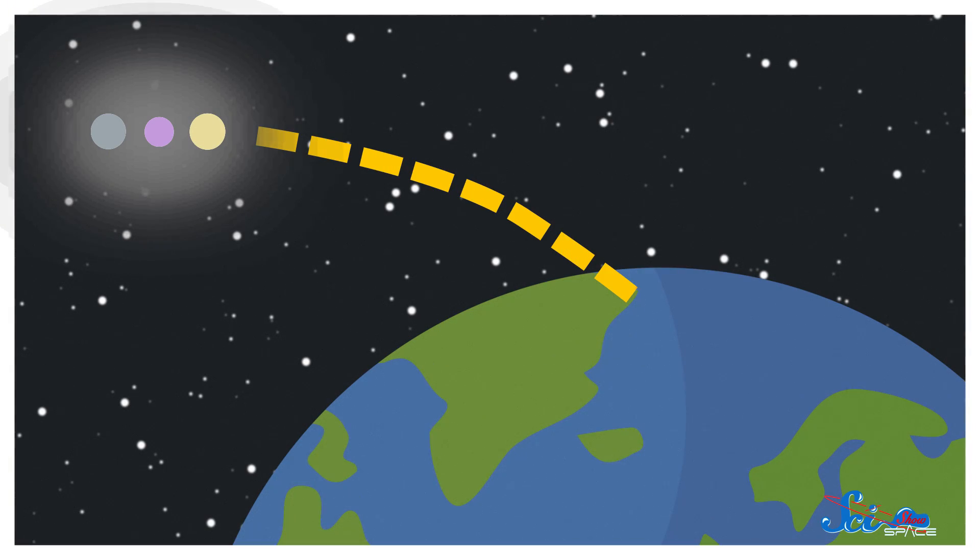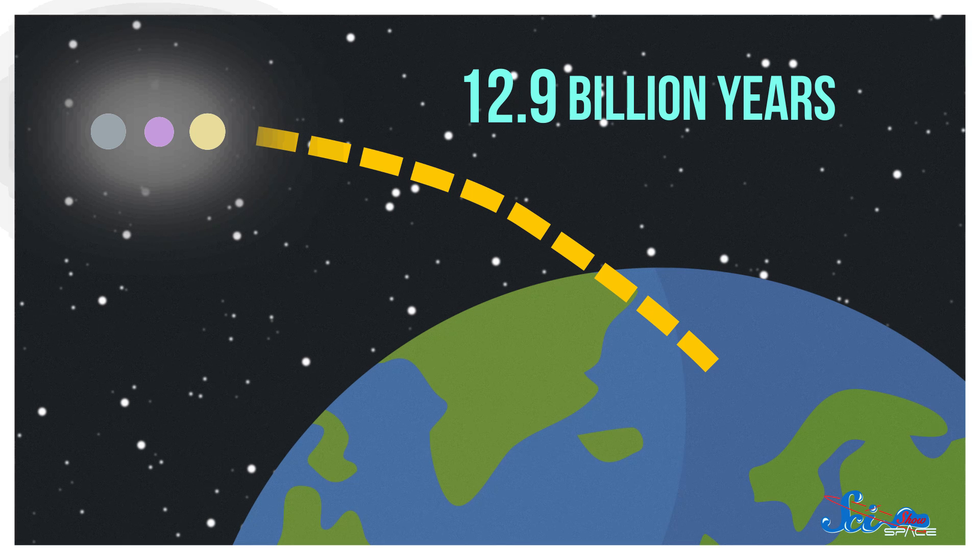But luckily for them, Himiko isn't nearby. It's so far away that its light took 12.9 billion years to reach Earth.